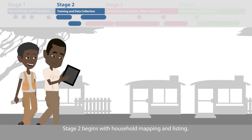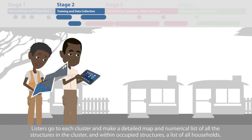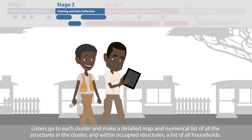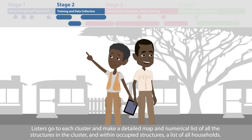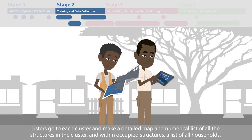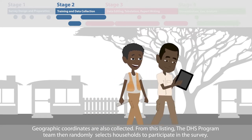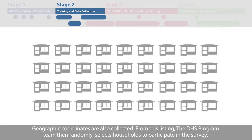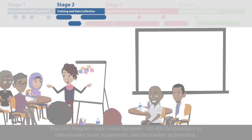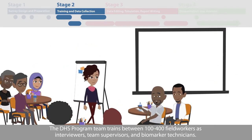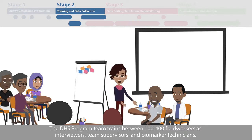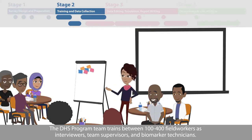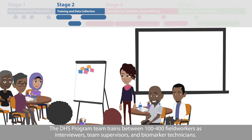Stage 2 begins with household mapping and listing. Listers go to each cluster and make a detailed map and numerical list of all the structures in the cluster, and within occupied structures, a list of all households. Geographical coordinates are also collected. From this listing, the DHS program team then randomly selects households to participate in the survey. The DHS program team trains between 100 to 400 field workers as interviewers, team supervisors, and biomarker technicians.